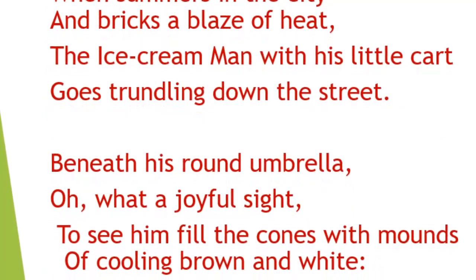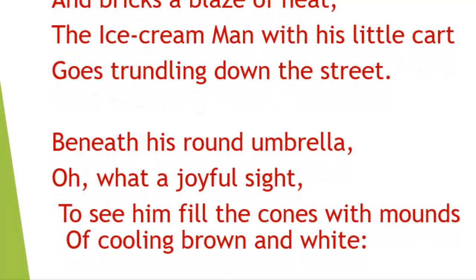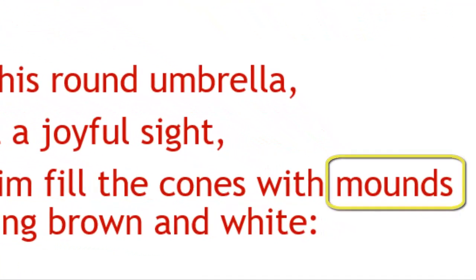In the second stanza, the poet states that the little cart of the Ice Cream Man has a shade of an umbrella to protect the ice cream from blazing sunlight. At the sight of the little cart, the children become very happy. The Ice Cream Man fills the cones with mounds of cooling brown and white ice cream. The poet says: 'Beneath his round umbrella, oh what a joyful sight, to see him fill the cones with mounds of cooling brown and white.' In the third line of the second stanza, the poet has used the word 'mounds,' which means heaps or piles. Am I clear to you, my dear students?